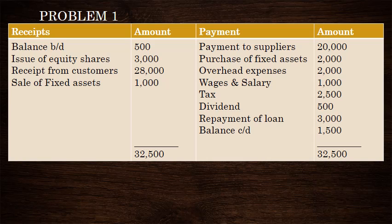Cash flow from operating activity. We can follow the direct method or the indirect method. Under the direct method, we have receipt from cash customers and payment to suppliers, then operating expenses. Both the direct method and indirect method are available.